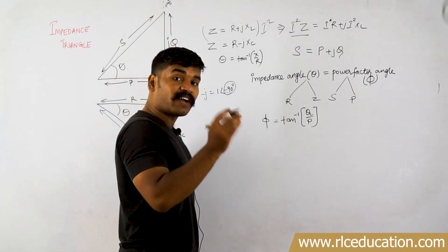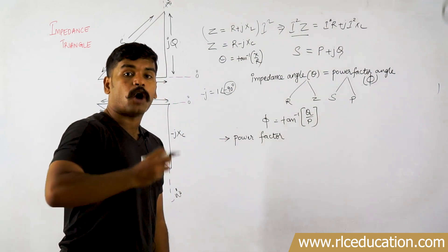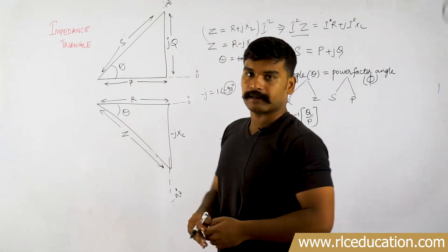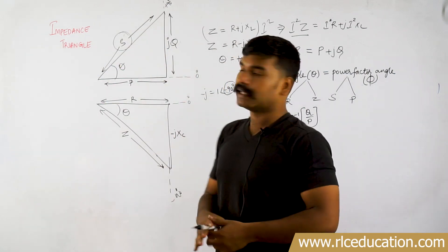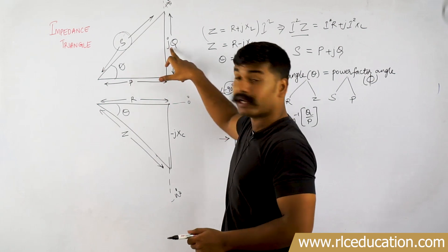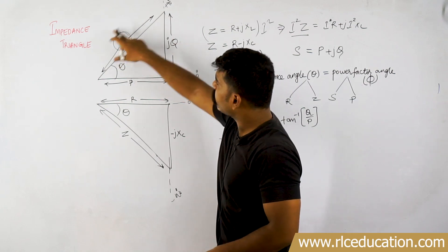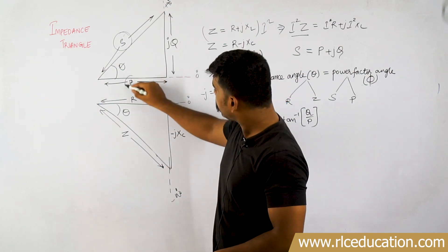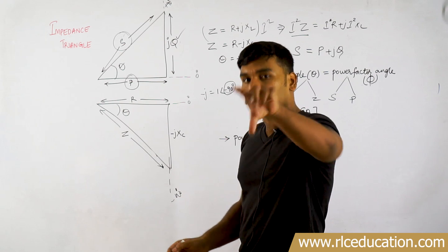There is a factor called power factor. Power factor represents how much amount of power has actually been used out of the total power. Looking at the power triangle, the resultant or total power is the apparent power S, because the circuit requires both active power to dissipate in the resistance and reactive power for the energy storage element. Out of this total S, the power we actually use is the active power P only. Active power is what we actually use; reactive power is required by the inductor to work.